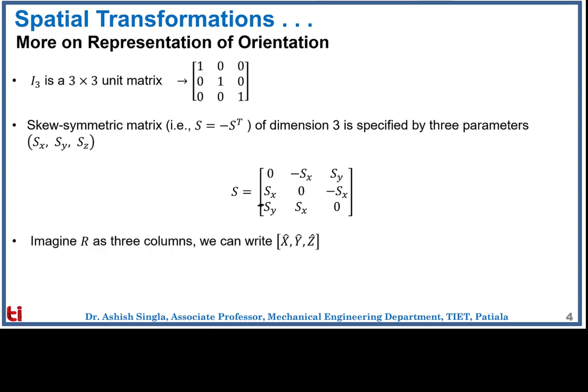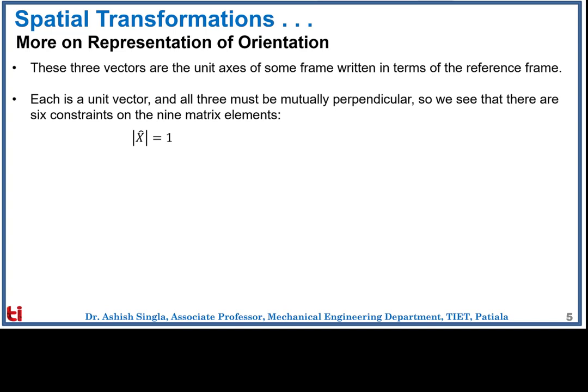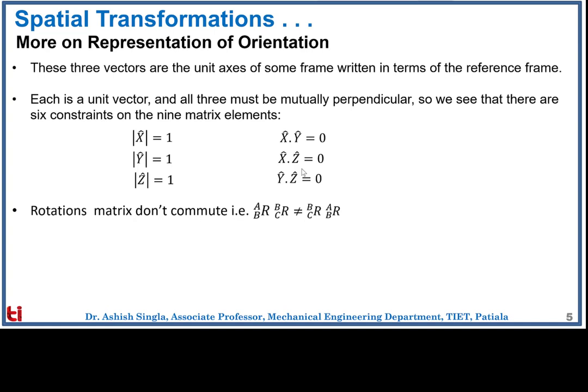The three columns of the rotation matrix can be written as X-cap, Y-cap, Z-cap, where cap indicates unit vectors. Each vector is a unit vector and they are mutually perpendicular. The rotation matrix has nine entries and six constraints: the norm of X, Y, and Z must each equal one, and the dot products X·Y, X·Z, and Y·Z must each equal zero. Therefore, any rotation matrix can be represented with only three independent quantities; the remaining six are dependent.